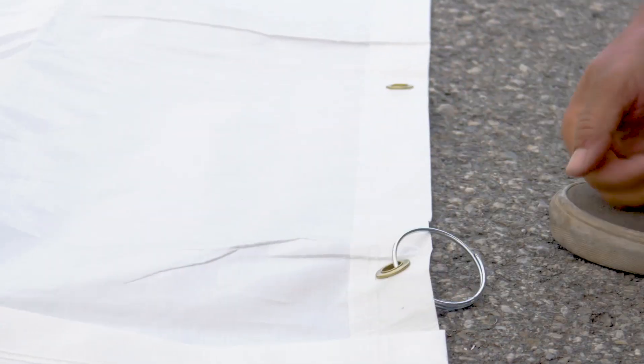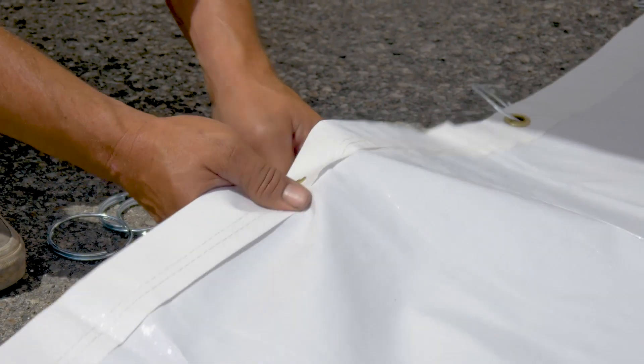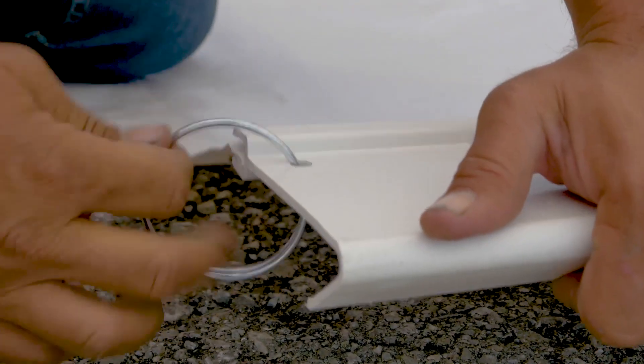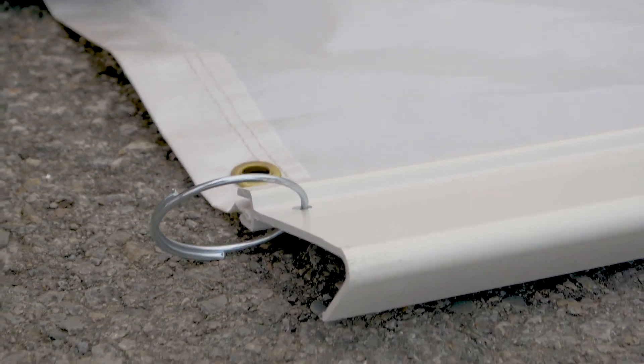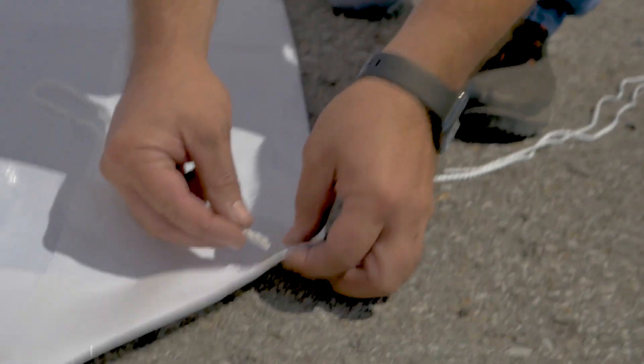Insert shower rings in the grommets at the top of the door and shutters. Slide the ropes through the side grommets.